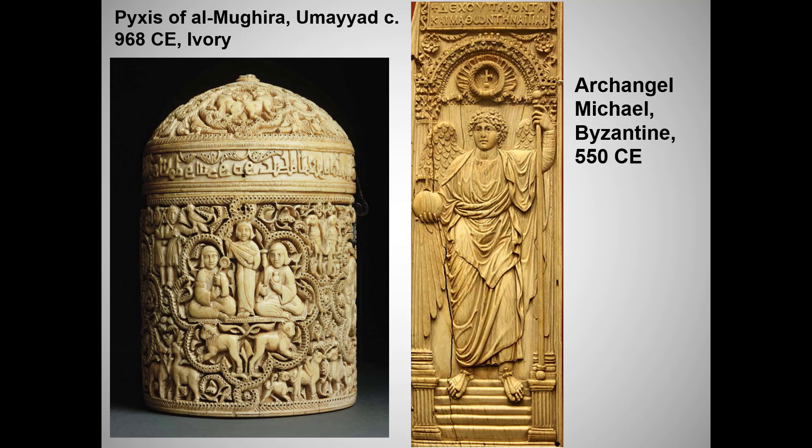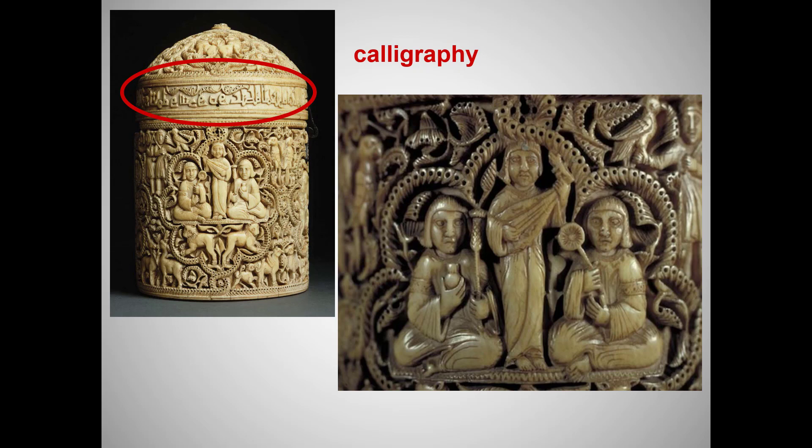Before I reluctantly leave Al-Andalus, let me talk about the last of our required works from that region. A pyxis is a cylindrical container that held aromatic spices, cosmetics, or even jewelry. This pyxis was a gift to a son of the caliph, perhaps in honor of his 18th birthday. It was carved from ivory from an elephant's tusk — a beautiful, durable, but easily carved material very popular in both Islamic and Byzantine culture. Note the calligraphy just below the lid. It reads: Blessing from God, goodwill, happiness, and prosperity to Al-Mughira, son of the commander of the faithful, may God's mercy be upon you.